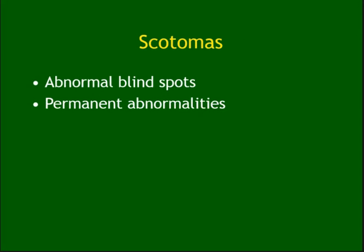Scotomas — these are abnormal blind spots. We do have a normal blind spot, which is the optic disc. But abnormal scotomas can occur when something happens to the vitreous humor — a small area of degeneration acquires color and intervenes with vision. People describe seeing something like a fly or a dark spot, fixed or moving — that is a scotoma.